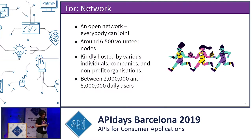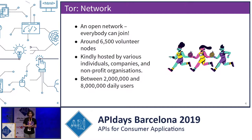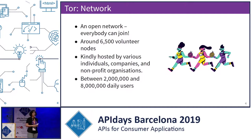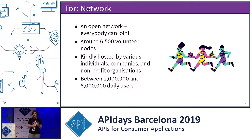Tor is also a network. It's a decentralized peer-to-peer network, essentially. It is free to connect. Anyone can download the Tor program and connect to the network — you don't need to register, you don't need to identify yourself. Currently we have between 6,000 and 7,000 nodes. These are the servers that make up the network, also known as relays, and they're run by volunteers and organizations worldwide.